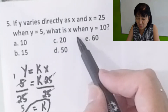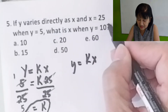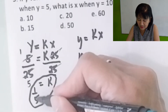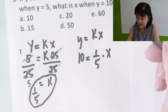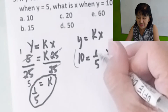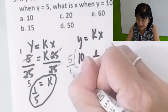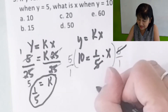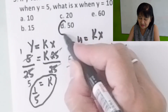Now, what is x when y is 10? Go back to y equals kx. Substitute y equals 10 and k equals 1/5: 10 equals (1/5) times x. Multiply both sides by the reciprocal 5 over 1. X equals 10 times 5, which is 50. The correct answer is 50, which is letter D.